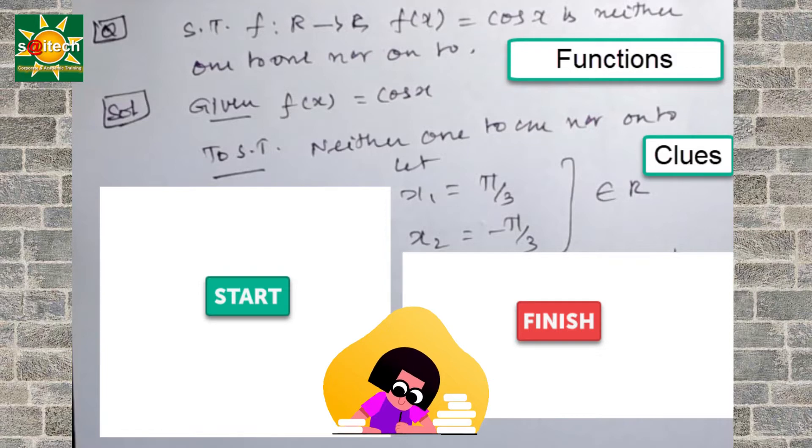Here we are given some clues. You can take x1 equal to π by 3, x2 equal to minus π by 3. Both belong to real numbers.